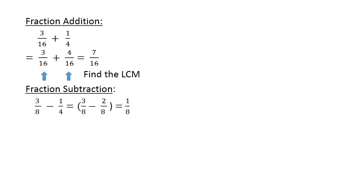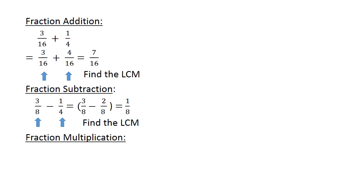Fraction subtraction: 3 over 8 minus 1 over 4. Find the lowest common multiple. 3 over 8 minus 2 over 8 equals 1 over 8.